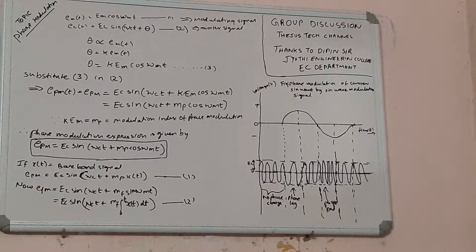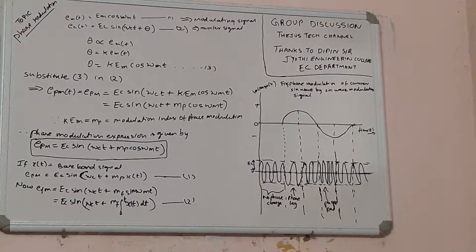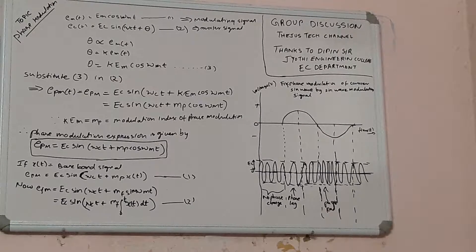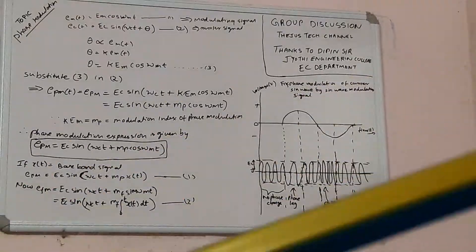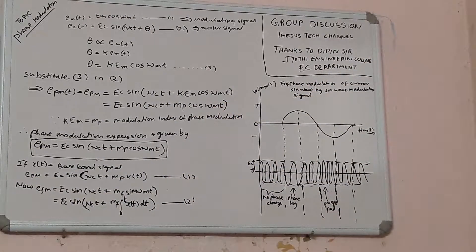During the modulation process, amplitude and frequency are constant. The greater the amplitude of the modulating signal, the greater the phase shift. The positive alternations of the modulating signal produce a lagging phase, and the negative signal also produces a lagging phase shift, as we can see from the graph on the right side. As the modulating signal goes positive, the phase lag increases with the amplitude of the modulating signal.